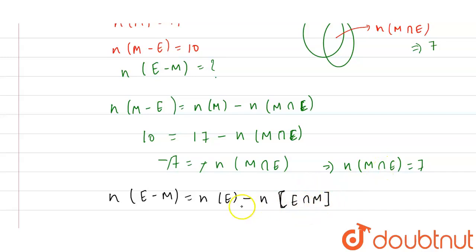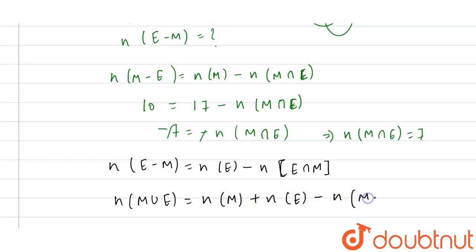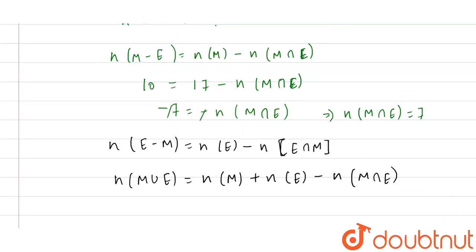For finding n(E), we use the formula: n(M ∪ E) = n(M) + n(E) − n(M ∩ E). We know n(M ∪ E) = 35, n(M) = 17, and n(M ∩ E) = 7. Substituting: 35 = 17 + n(E) − 7, so 35 = 10 + n(E).